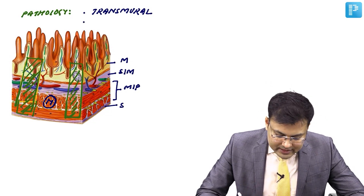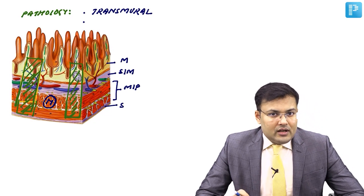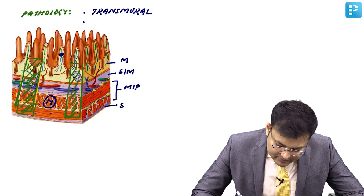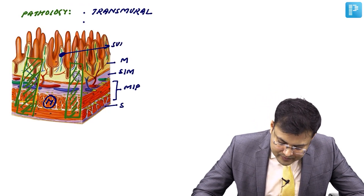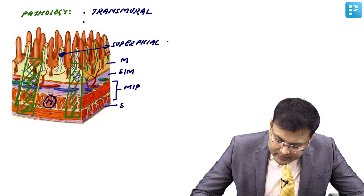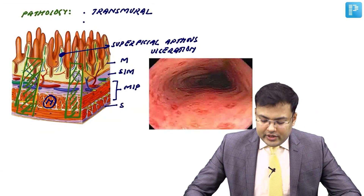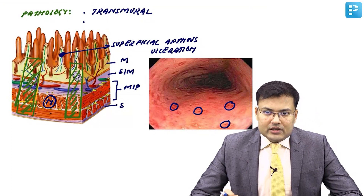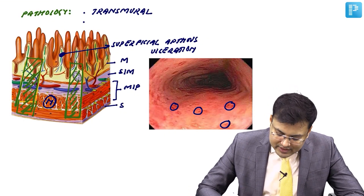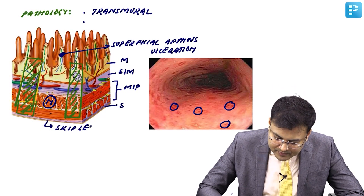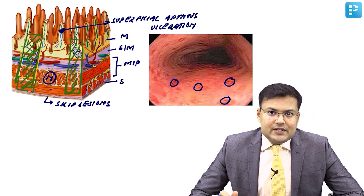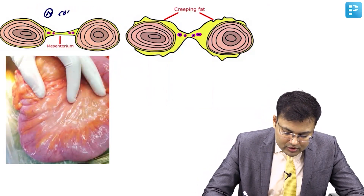The earliest gross pathological lesion in Crohn's disease is superficial aphthous ulceration. These superficial aphthous ulcerations occur in the mucosa. Because there are involved areas and normal areas, this is associated with skip lesions — there is normal mucosa and normal bowel in between the diseased segments.